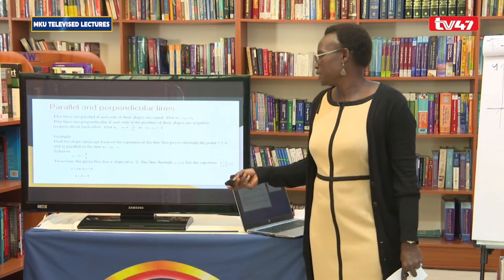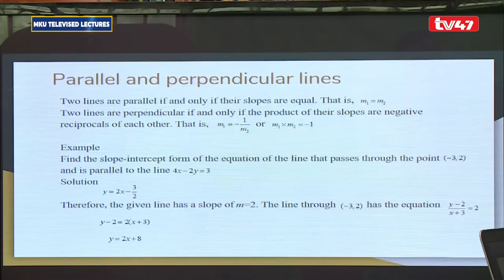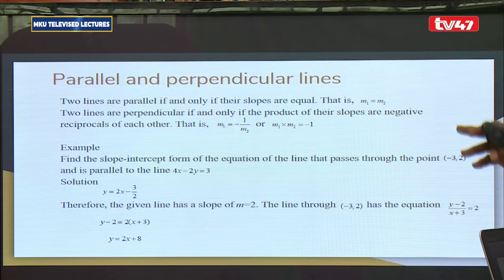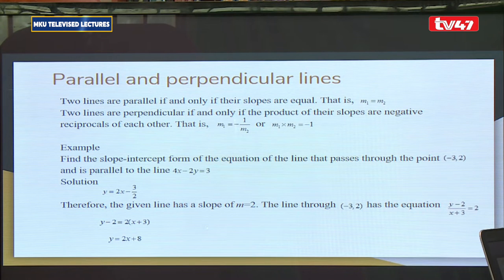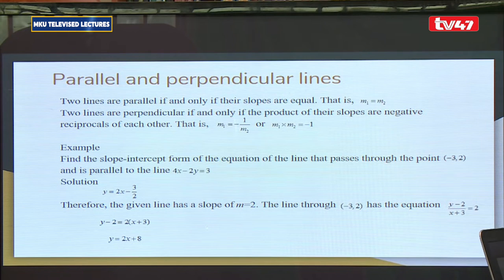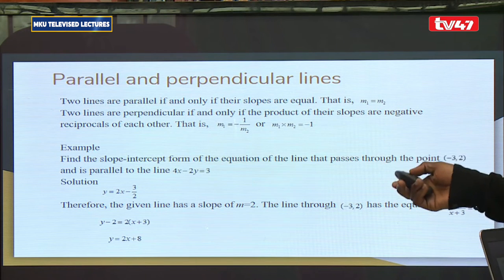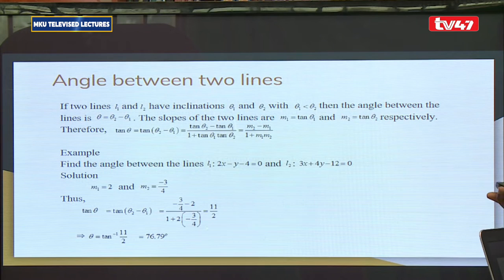Two lines are parallel if they have the same gradient, and two lines are perpendicular if the product of their gradients is -1. Example: find the slope-intercept form of the equation of a line passing through a point and parallel to a given line. Since parallel lines have the same gradient m = 2, and the line passes through (-3, 2), the equation is y = 2x + 8.